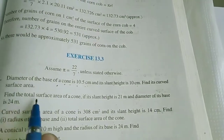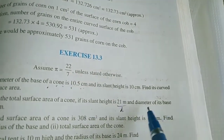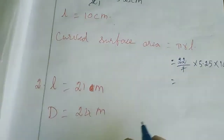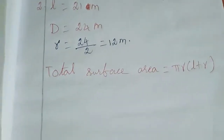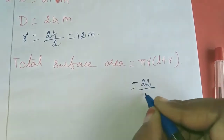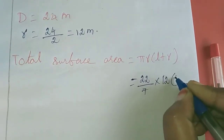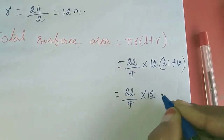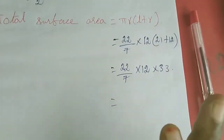Now I am going to move to the second sum. Find the total surface area of a cone if slant height is 21 cm, that is l equals 21 m, and diameter of its base is 24 m, so r equals 24 by 2, that is 12 m. They are asking for total surface area, so the formula is pi r into (l plus r). So 22 by 7 into 12 into (21 plus 12), that is 33. After simplifying this, you will get the total surface area.